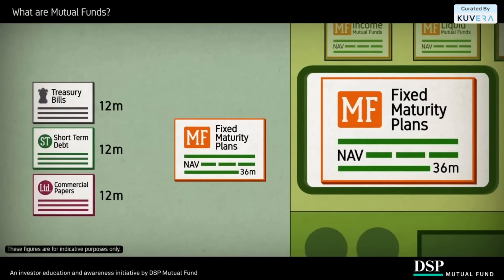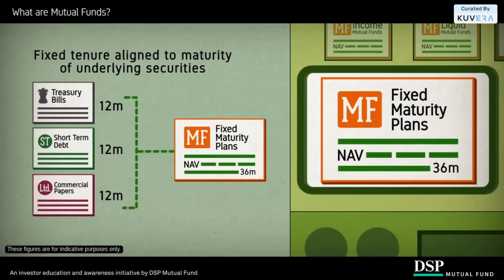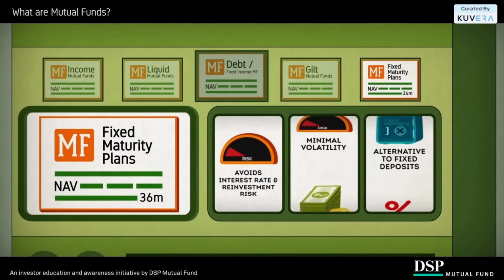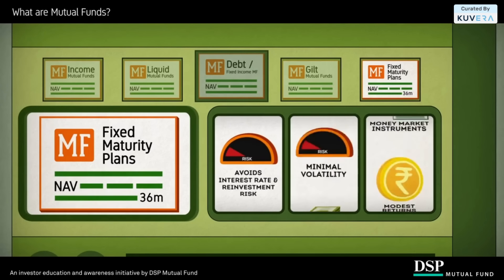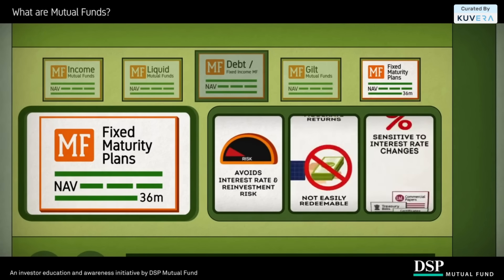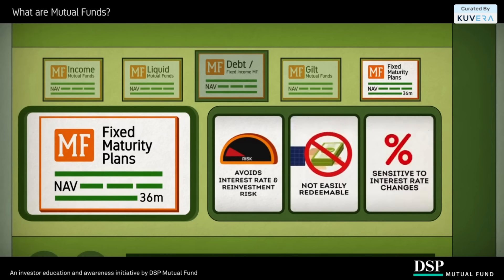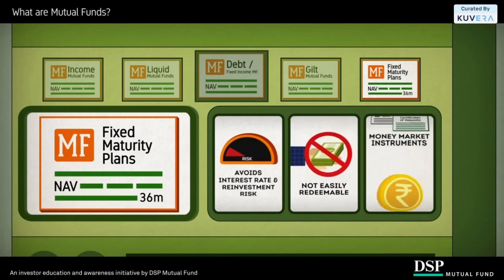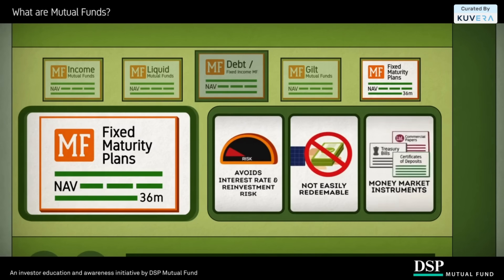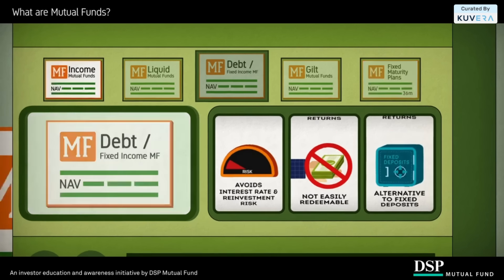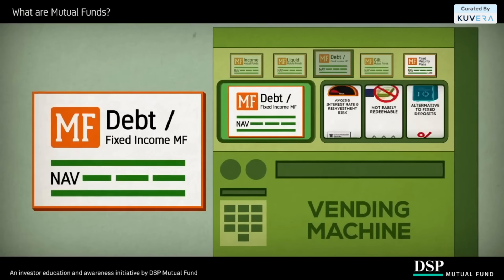Fixed maturity plans (FMPs) are close-ended debt funds with a fixed tenure aligned with the maturity dates of the securities held by the fund. This synchronized maturing takes care of interest rate risk or reinvestment risk. They require you to remain invested for a finite period and, unlike liquid funds, they are not easily redeemable. But because the returns are more stable and predictable within a range, they are also considered a great alternative to fixed deposits.